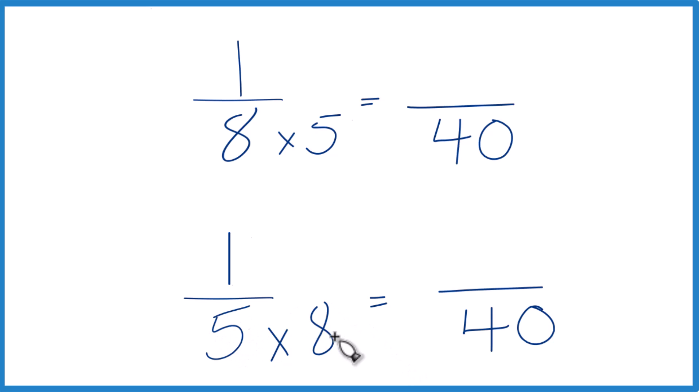But we can't just multiply 5 by 8 in the denominator. We also have to multiply the numerator by 8. That's because 8 over 8 is equal to 1. So we're just multiplying by 1. We don't change the value, just the way it's represented. 1 times 8 is 8.